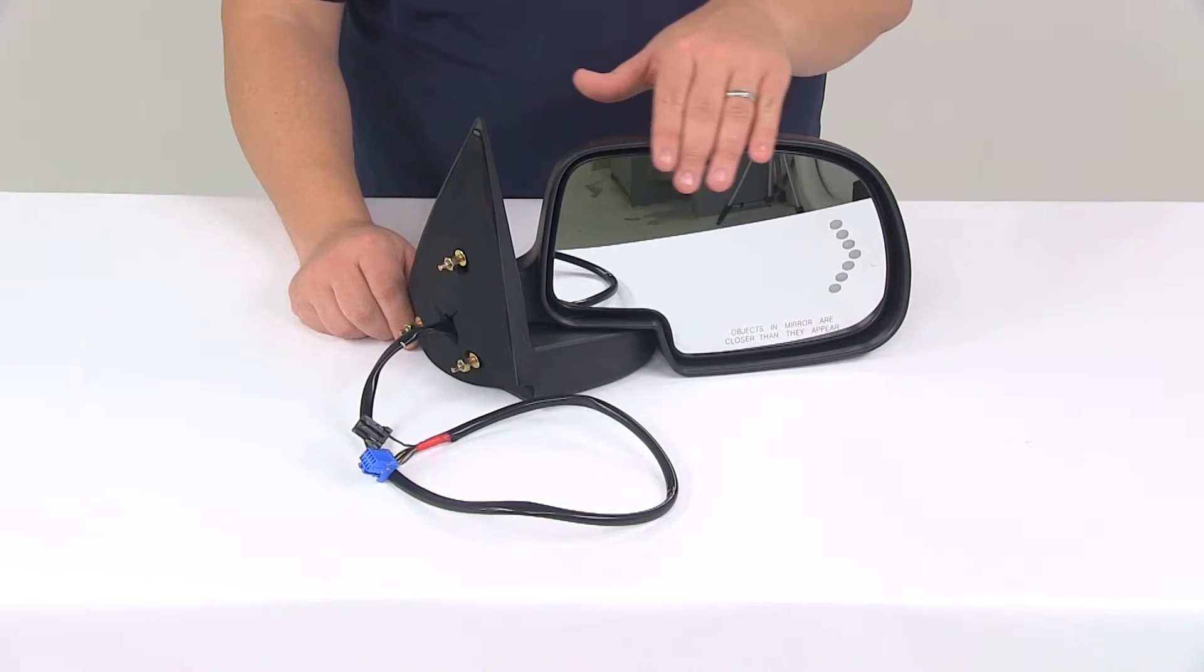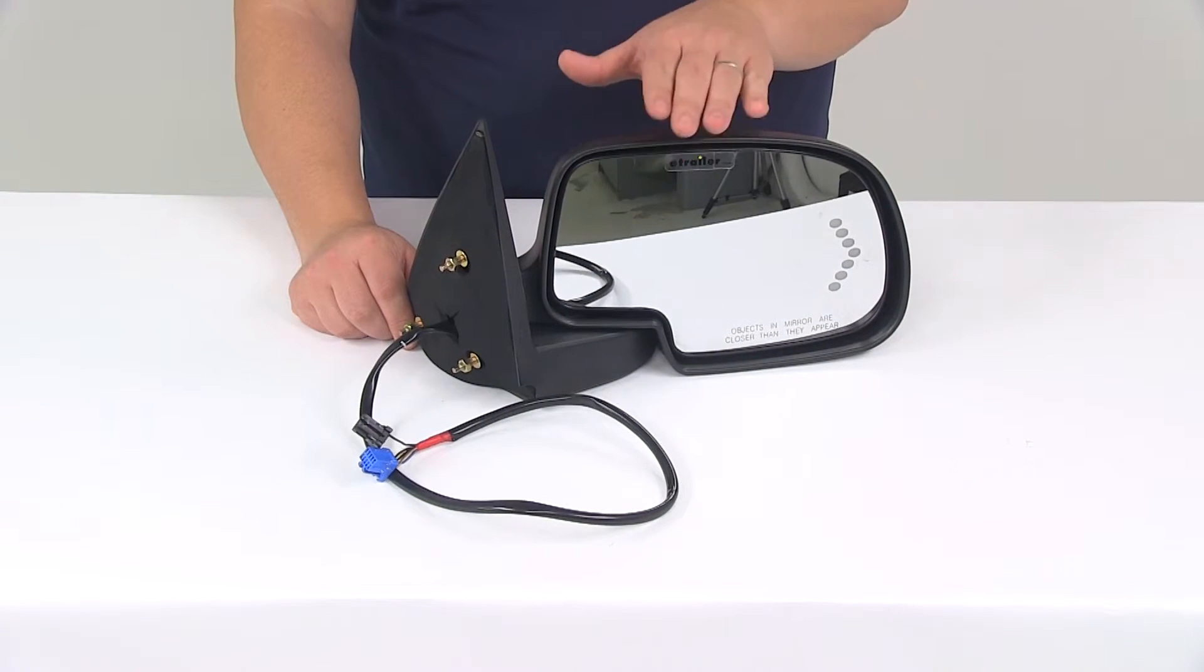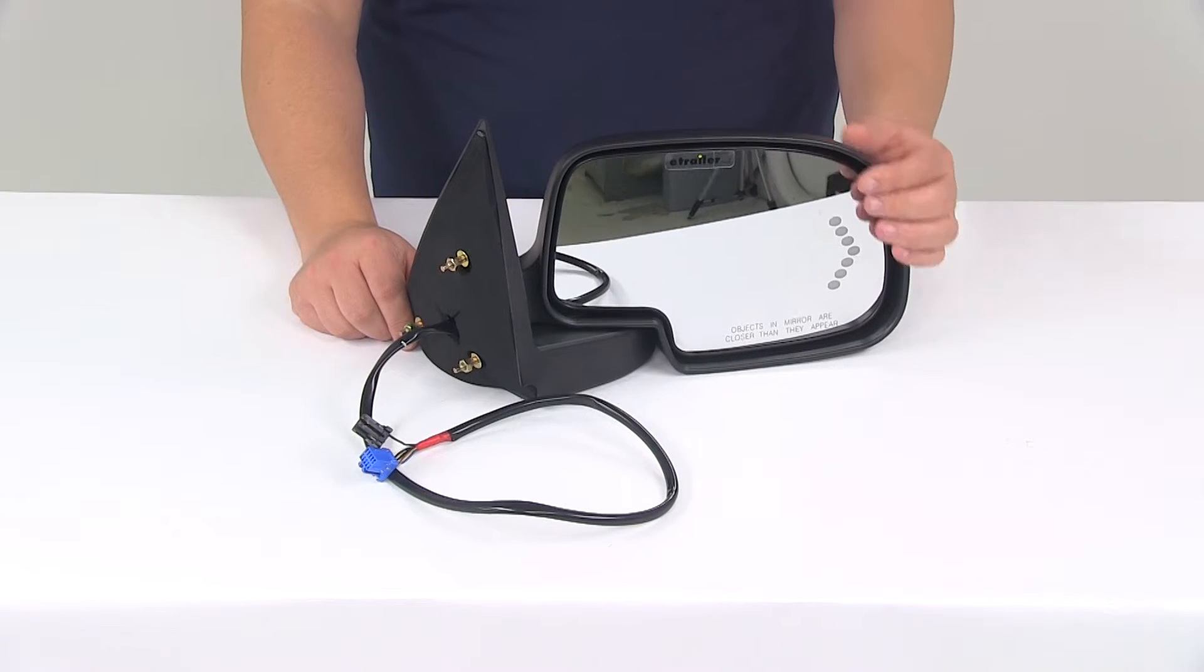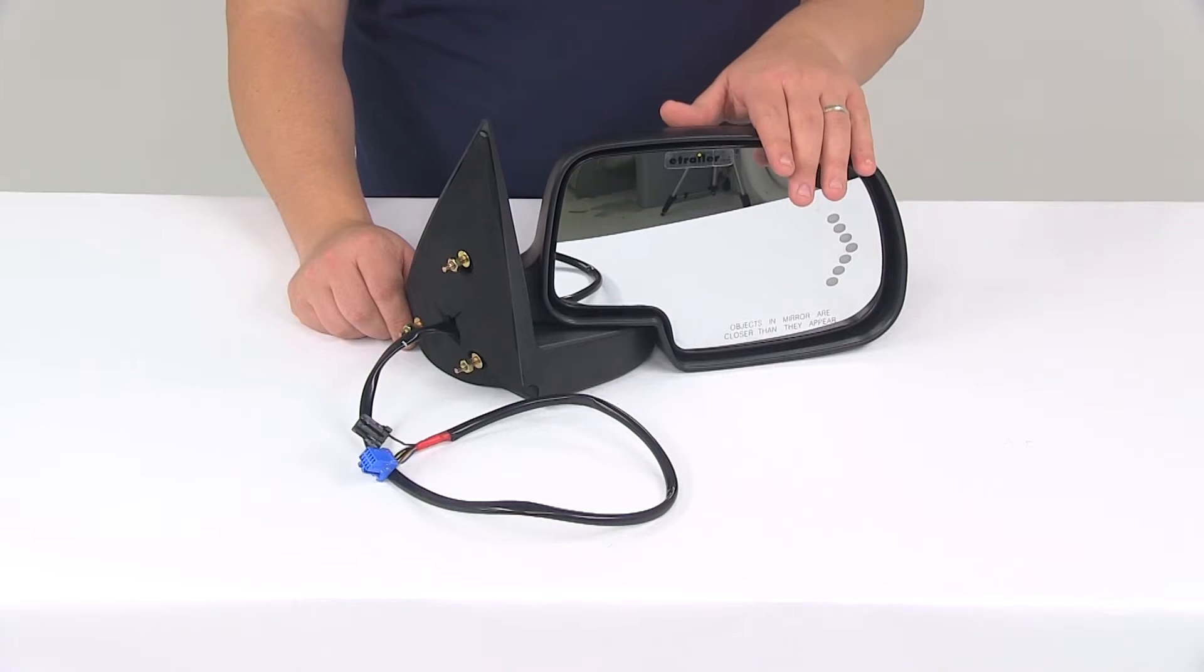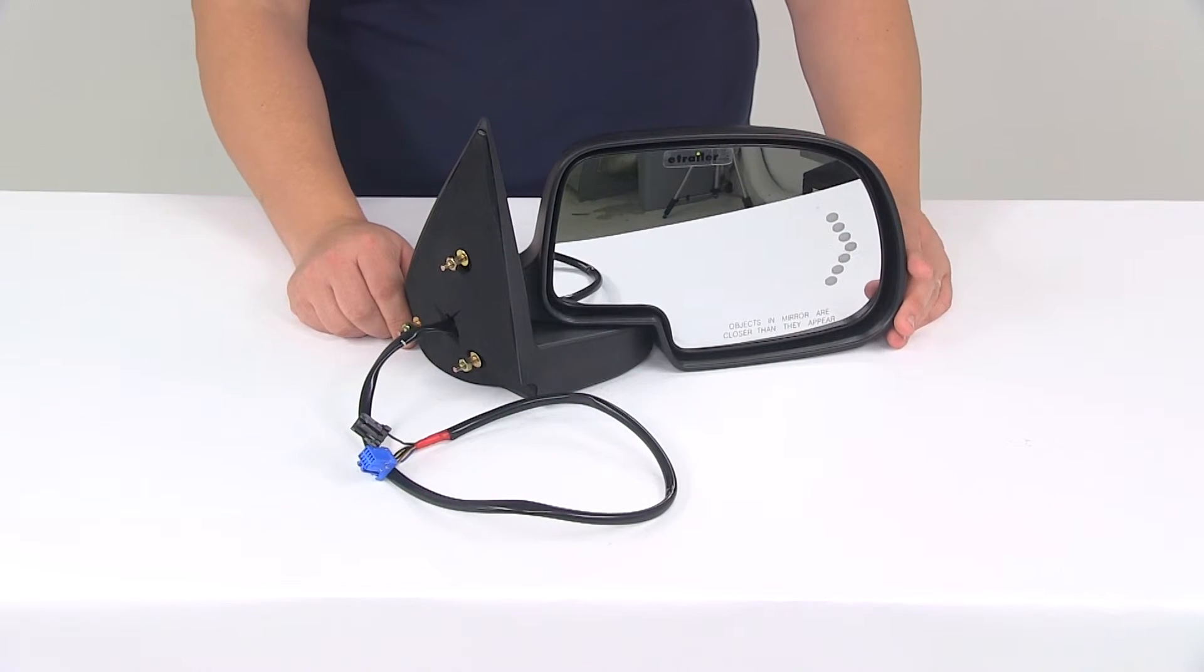We have the OE grade convex glass with first surface plating to reflect clear images. The front of the glass is plated with a reflective chrome and the convex lens provides a wide angle view that really helps reduce blind spots.